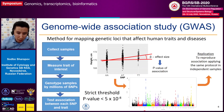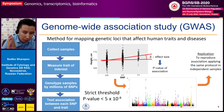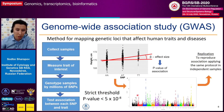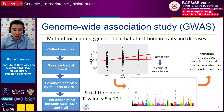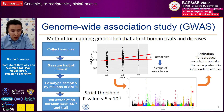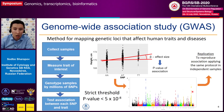You do this for millions of markers distributed across the genome, and to determine the loci that influence the trait of interest, you apply the strict threshold of 5 multiplied by 10 to the power of minus 8. This is how you identify loci. The final stage is the so-called replication stage, where you aim to reproduce found associations by applying the same protocol but in independent samples.